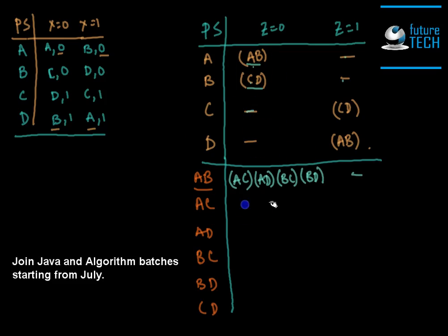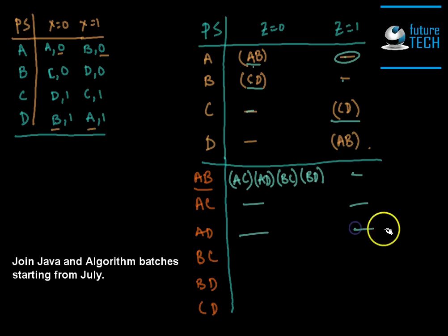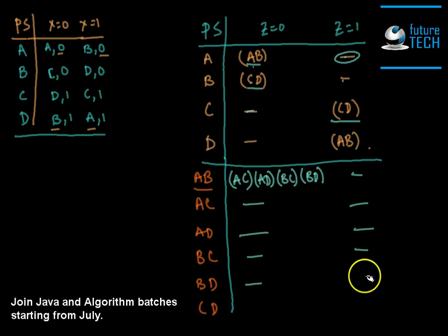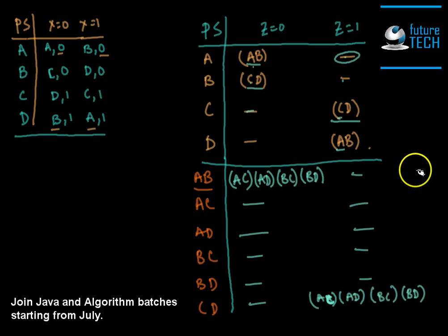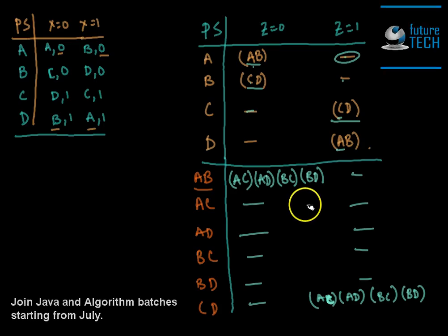For AD, AC, BC, and BD — we similarly have nothing or blank entries producing blank results. For CD under z=1, we get implied pairs AC. Since the lower half of the testing table does not contain any repeating state sets, the machine is confirmed to be an information lossless machine. Therefore, we can find the input string against the given output string.